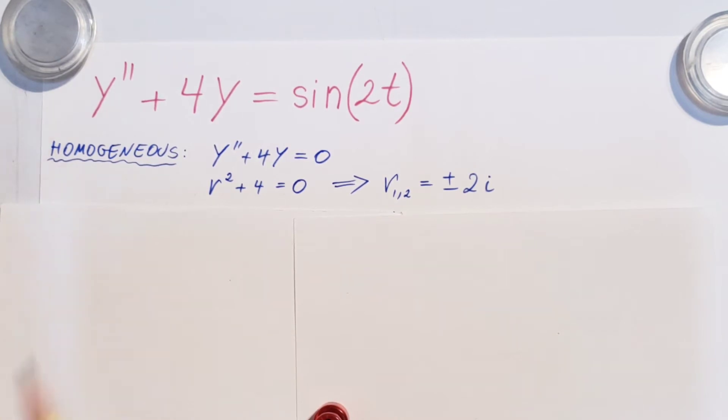Homogeneous solution: we're gonna put y double prime plus 4y equals 0. Write up our characteristic equation r squared plus 4 equals 0. From here we're able to find our two roots which are plus minus 2i, complex roots.